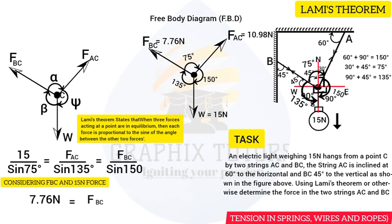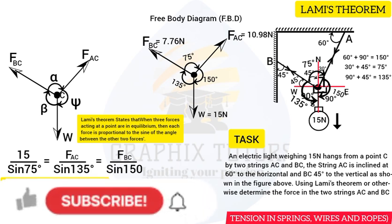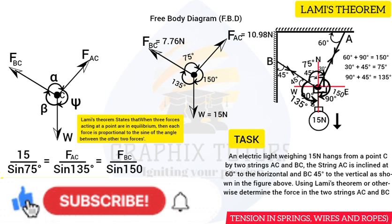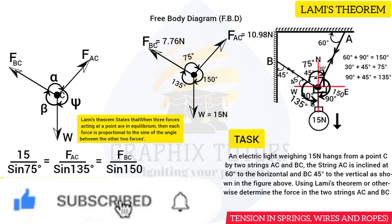There is more tension and force experienced by string AC, inclined at 60 degrees, than string BC, inclined at 45 degrees. If you found this video helpful, please don't forget to like, subscribe, and share the video. Thanks for watching.